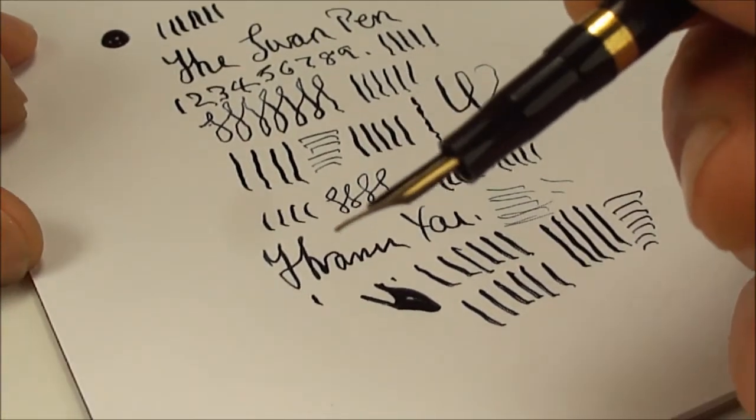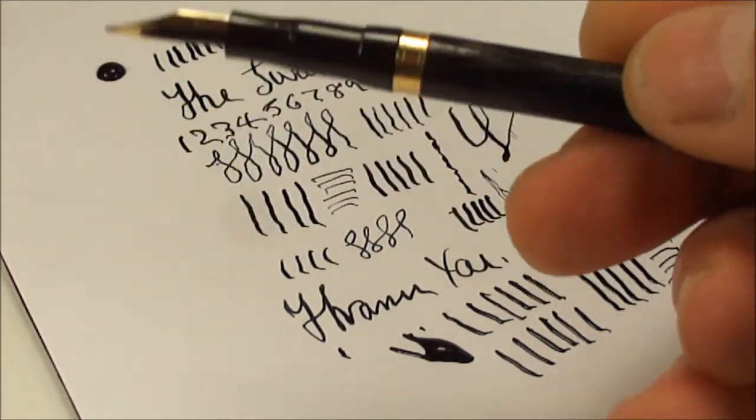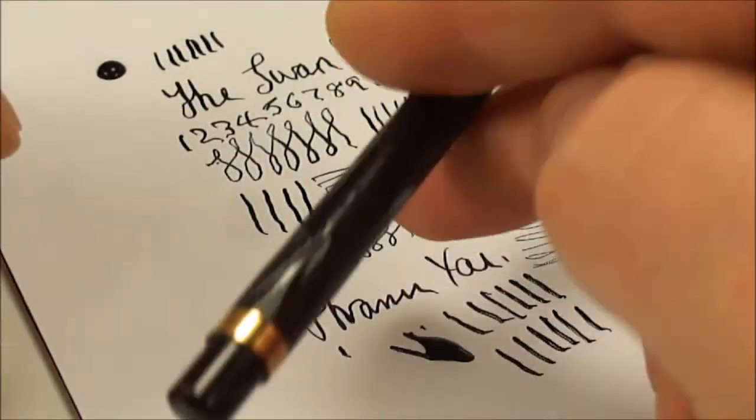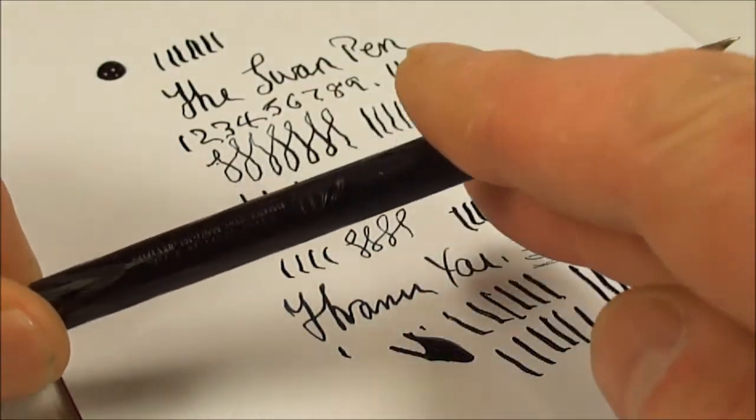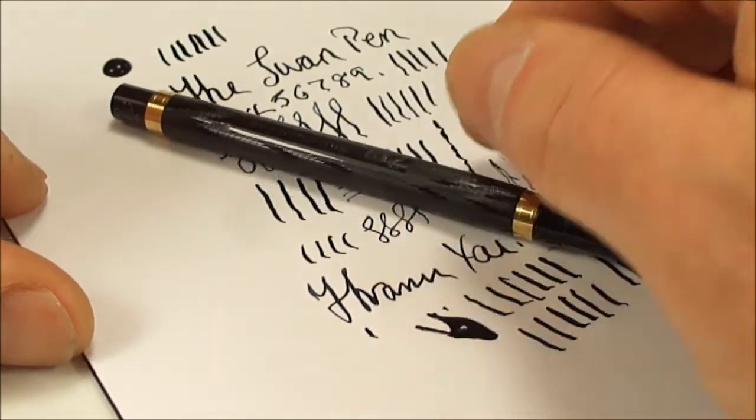But all in all, as you can see, we're getting a broad line and then a cross line. It's actually so flexible it's actually quite difficult to write with. It's obviously an acquired taste for somebody who knows how to write with a flex pen. So I'm going to leave it at that.